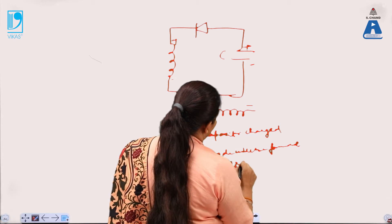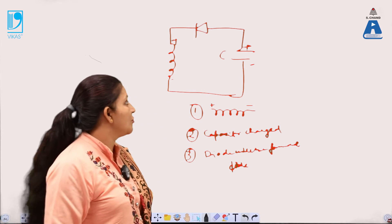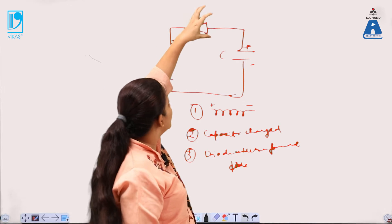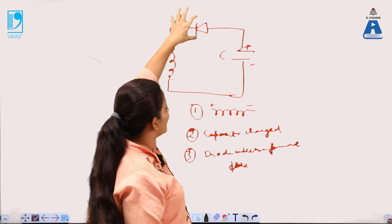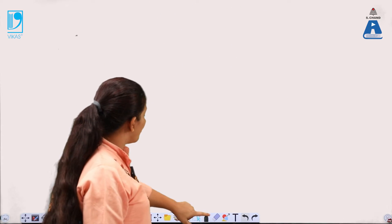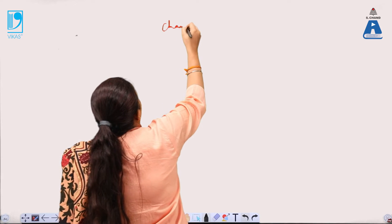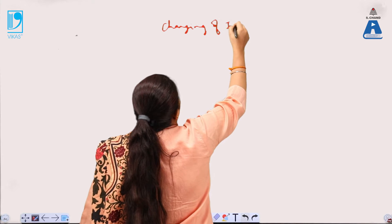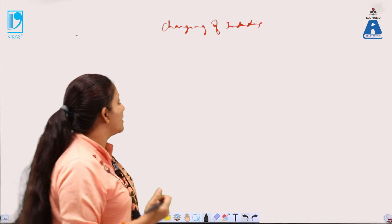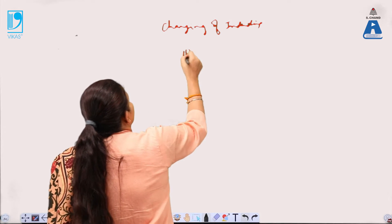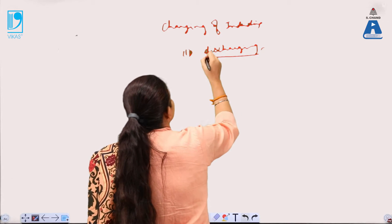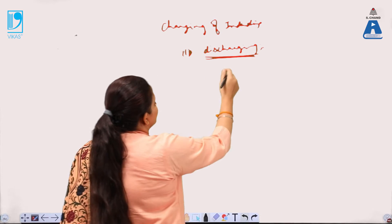When the diode is forward biased, we get a higher output value. The depletion region decreases and we get a larger output. This corresponds to the charging phase of the inductor coil — when the power supply is on, the inductor charges and the diode is forward biased.